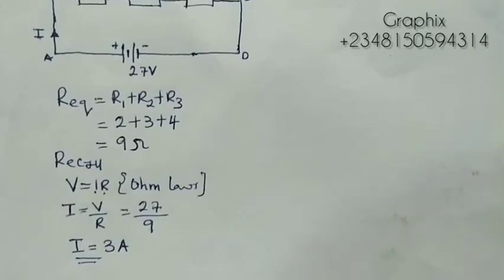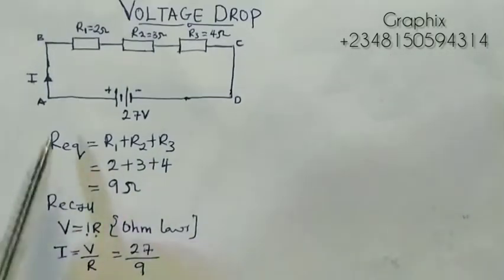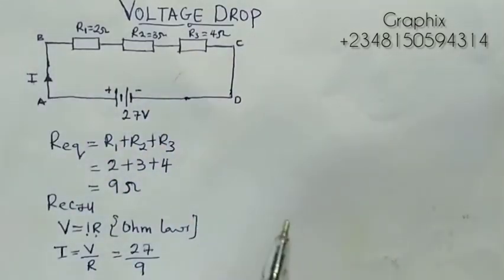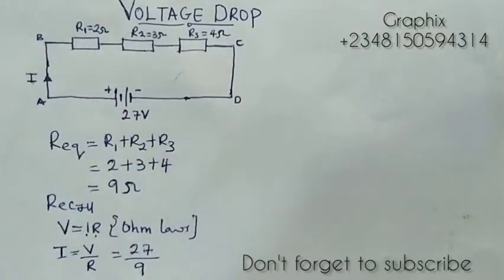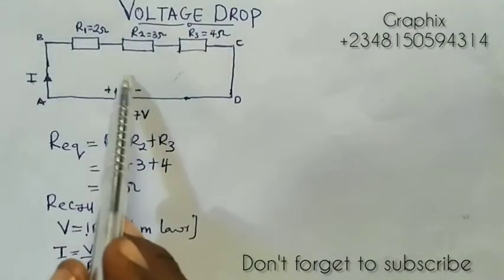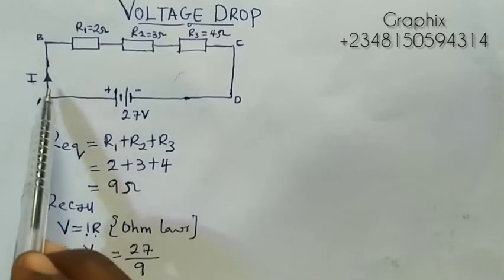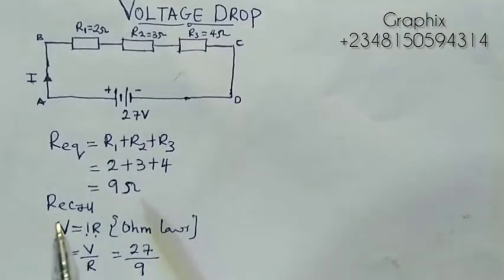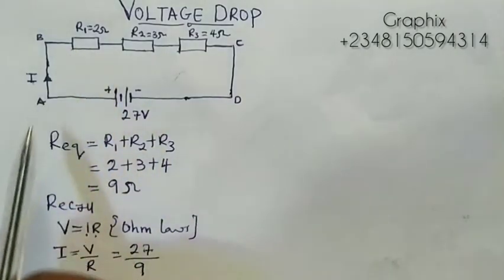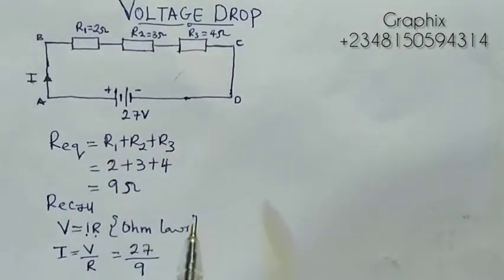Now I want to know the voltage drop when this current passes through each resistor. I want you to understand that resistors provide resistance to the flow of current. So when a voltage source produces the current, as current tries to flow through the resistance, the resistance reduces the flow of the current.